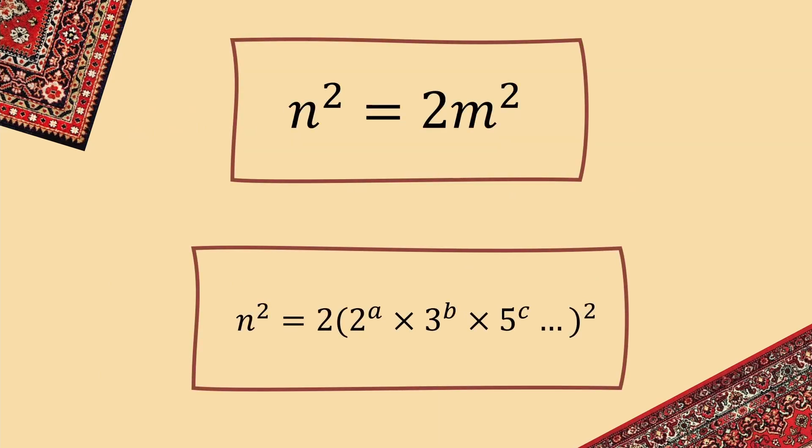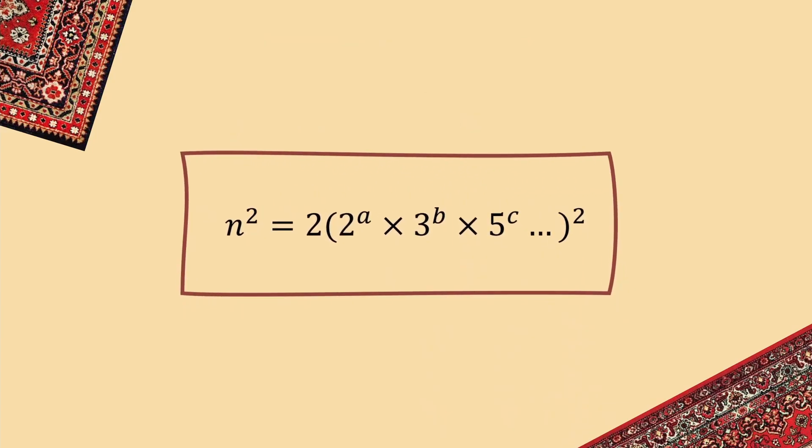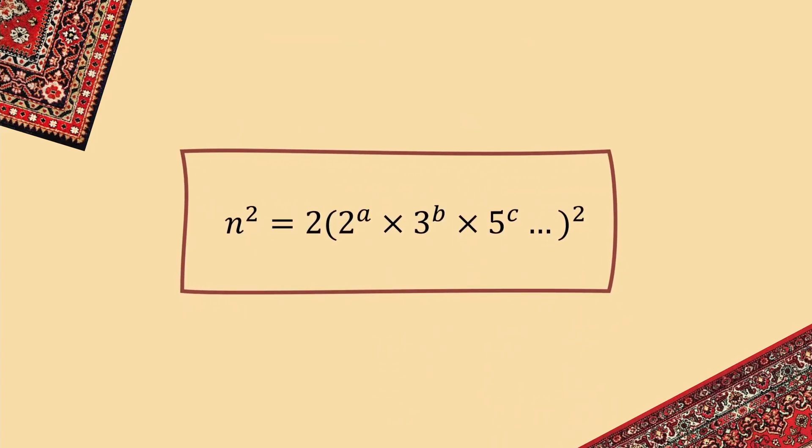With this new factor under our belt, let's take another look at our elusive formula from earlier. Subbing in the prime factors of M, in general since we don't know what M is, and noting that A, B and C could be equal to zero, which would remove that prime from the equation, we can bring in the exponent from the outside, so that now all of our prime factors are to even powers.